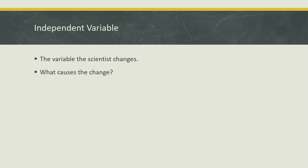When we talk about independent variables, you only want to change one variable at a time, because if you start changing multiple variables at one time, you're going to have no idea what causes the outcome. We're going to talk about this here in a little bit.